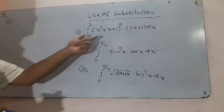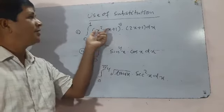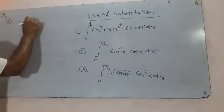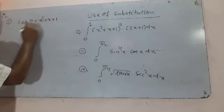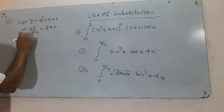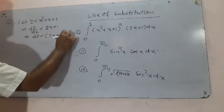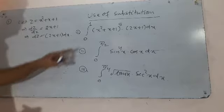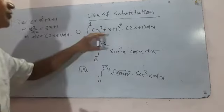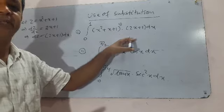For part (a), notice that the derivative of x² + x + 1 is 2x + 1, so we substitute. Let z = x² + x + 1, which implies dz/dx = 2x + 1, so dz = (2x + 1) dx. The variable x varies from 0 to 1; after substitution the integral is completely in terms of z.